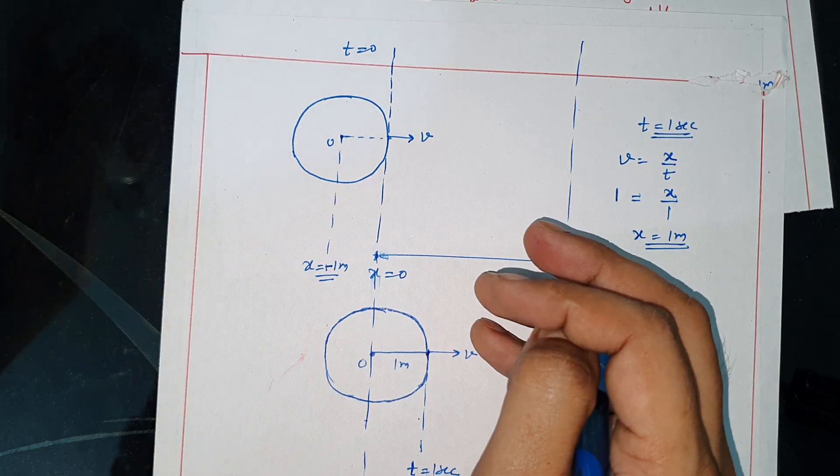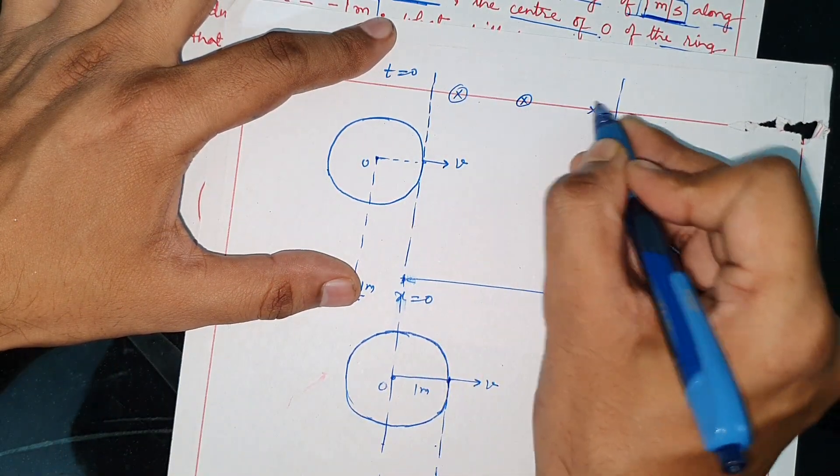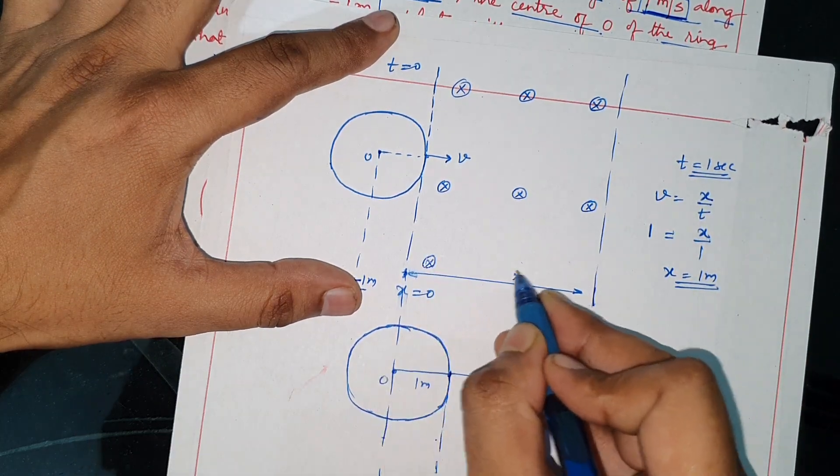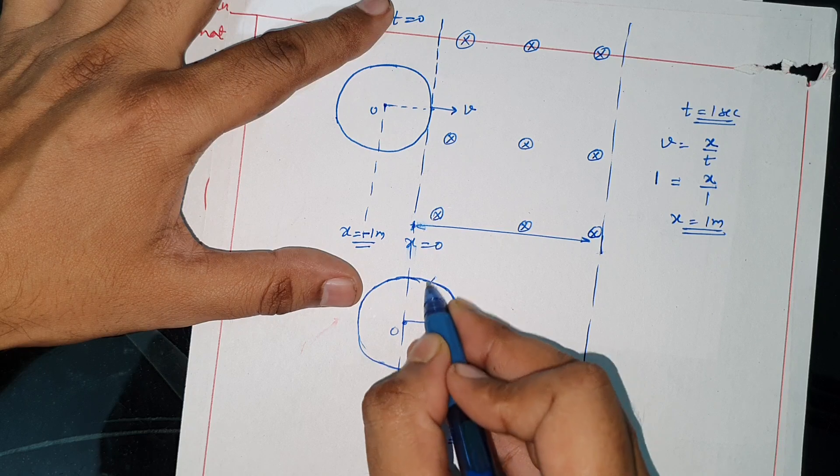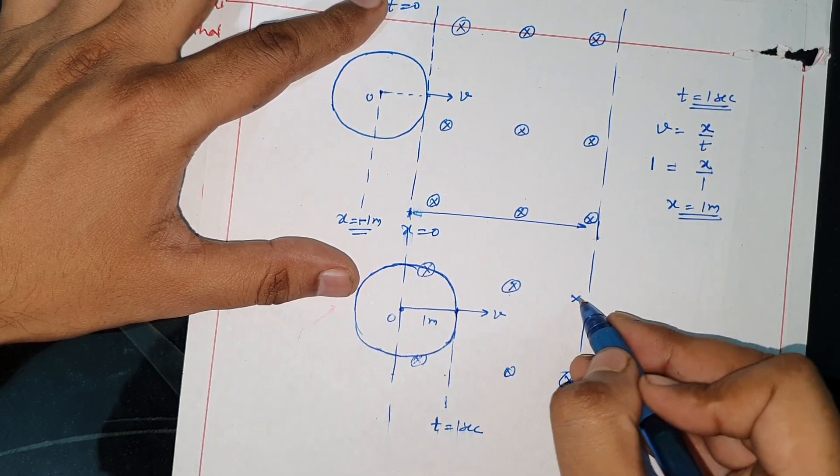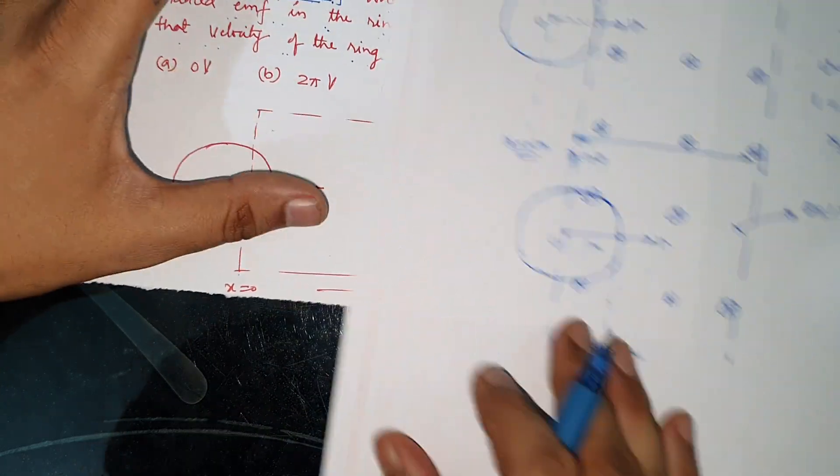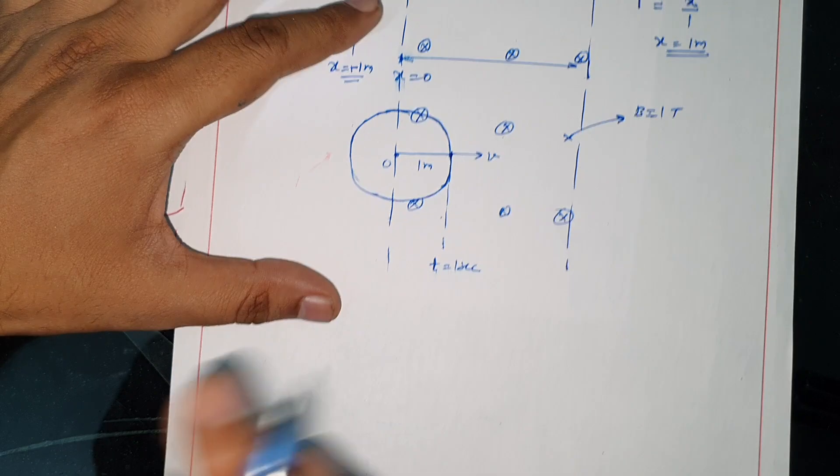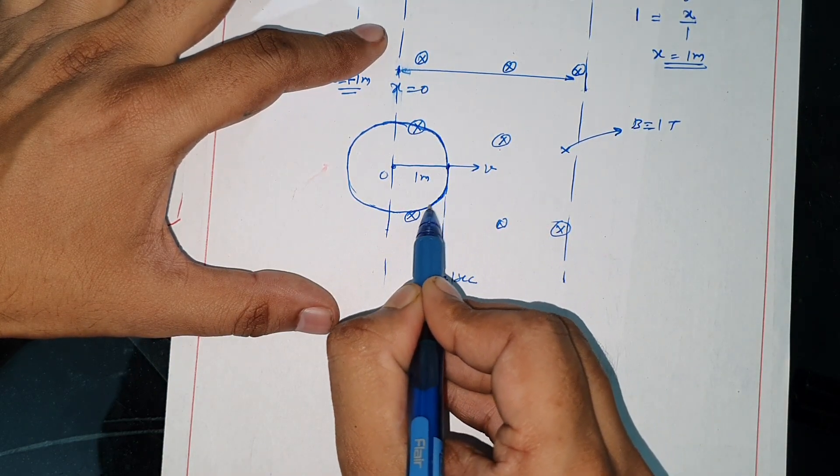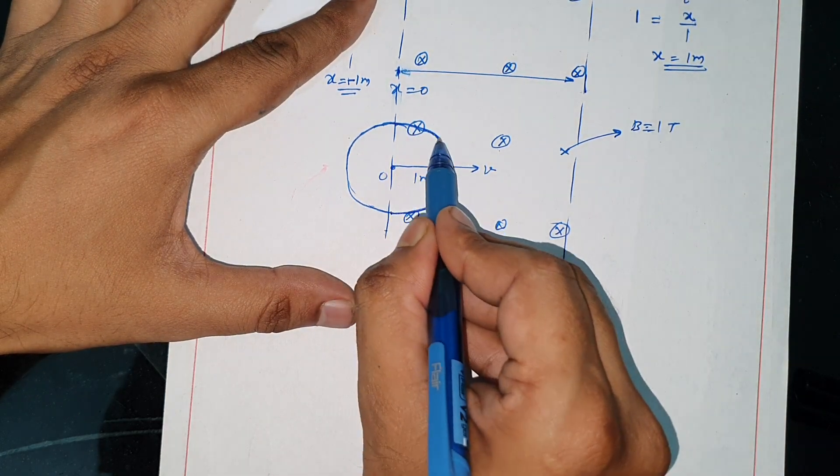Then, if the magnetic field is going into the plane, we will ask the magnetic field direction that we have been telling. In this portion, the portion has cut. This portion will be induced.